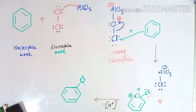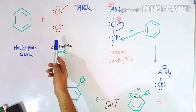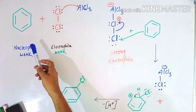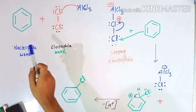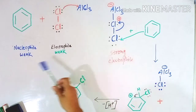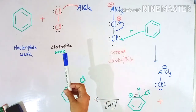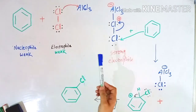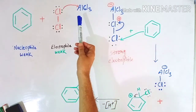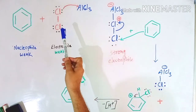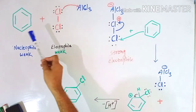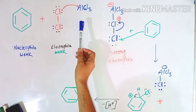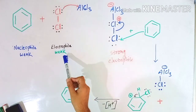Suppose we want to react both of them with each other — will they react? No, not at all. If you mix the chlorine gas into the benzene solution, chlorination of benzene will not take place at all, because both of them are very weak species to react with each other. So here comes the role of AlCl3: it facilitates the chlorination of benzene by converting this weak electrophile into a strong electrophile.